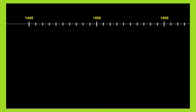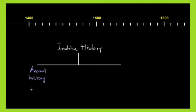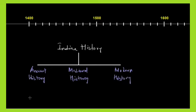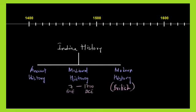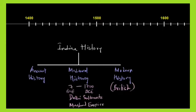Here you are watching specific years. According to the years, you may observe our Indian history, which is divided into three important periods: ancient, medieval, and modern. Especially in the modern period, Britishers were ruling over India. In the medieval period, from 700 to 1700, you may observe Delhi Sultanates and Mughals were there in our India.